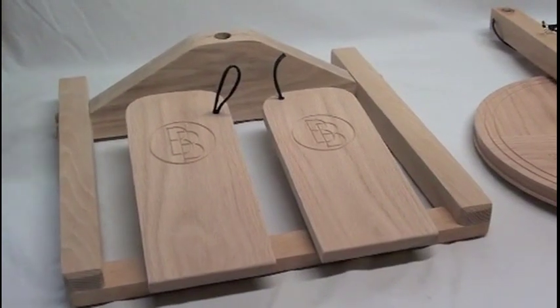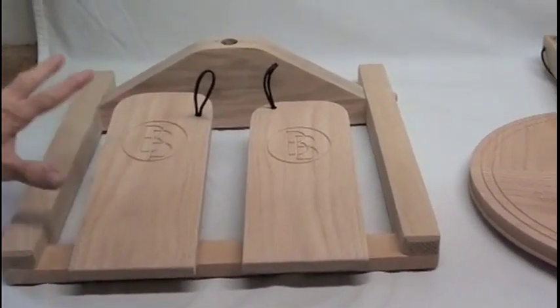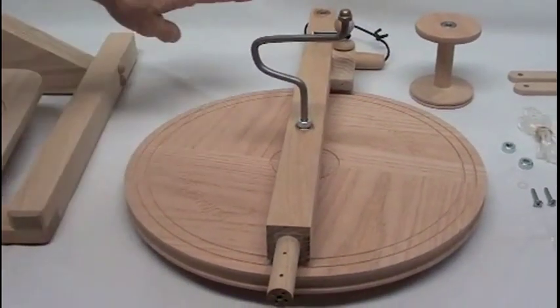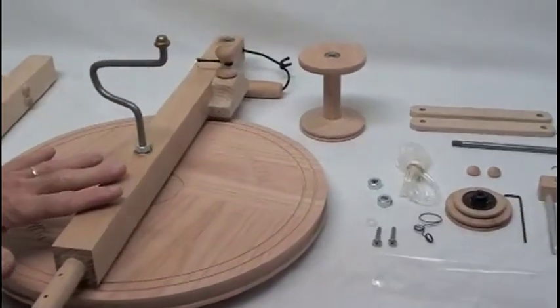In the box you will find the base assembly, treadle pedals already attached, the upright and wheel assembly with the scotch tension already attached, and the wheel attached to the upright.